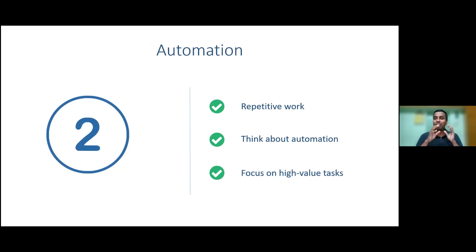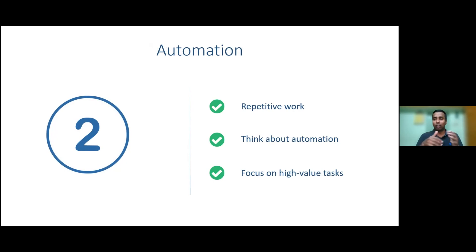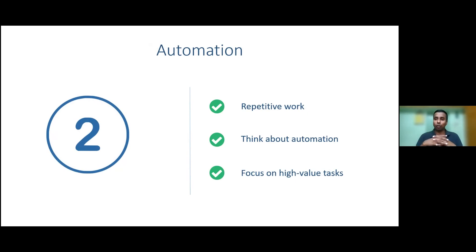Tip two: if you're doing any repetitive work, think about automation. Automate as much as possible using the tools at your disposal so that all the stakeholders in the swim lanes can focus on high-value tasks.